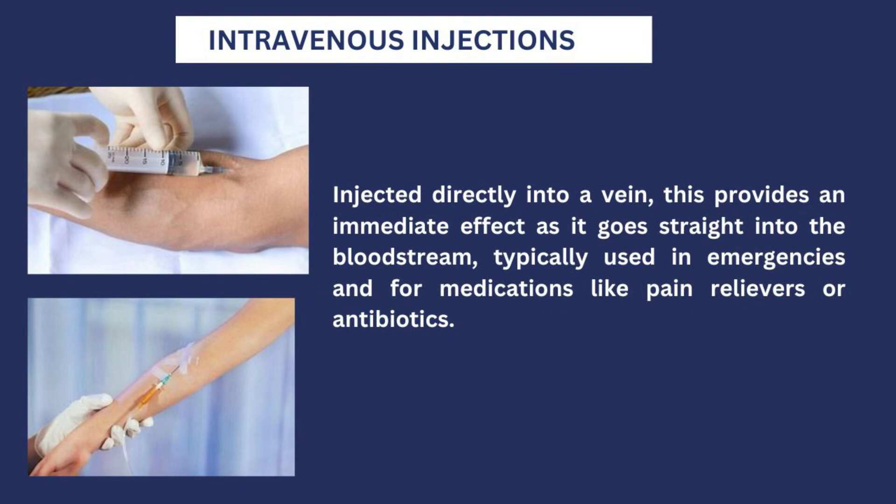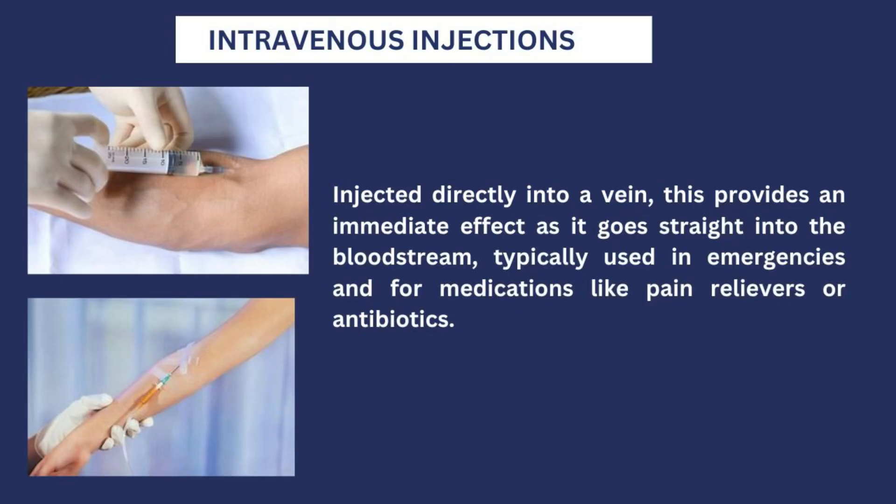Next, we'll talk about the intravenous injection, which goes directly into the vein. This type provides an immediate effect because when you inject medication through the vein, it goes directly into the bloodstream — making it the quickest way to get a medication acting in a patient. This route is typically used for emergencies, pain relievers, and antibiotics. We also use the intravenous route for blood transfusion and fluids when resuscitating a patient or correcting a fluid or electrolyte imbalance.